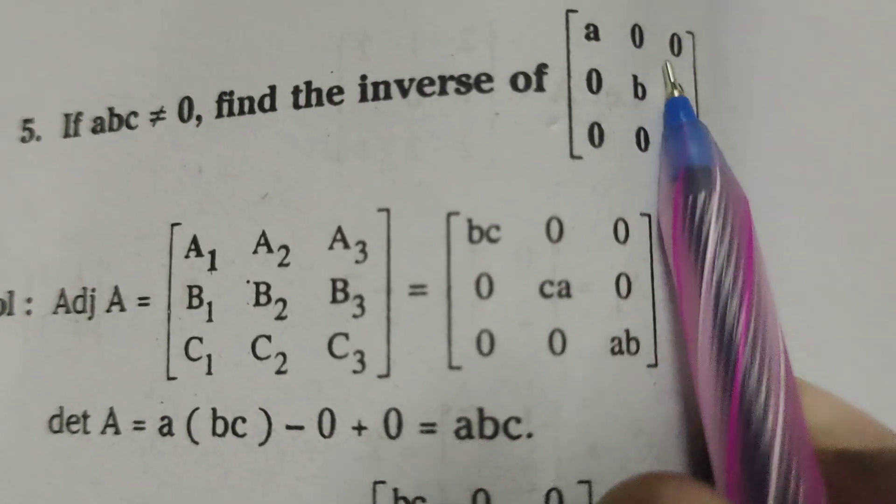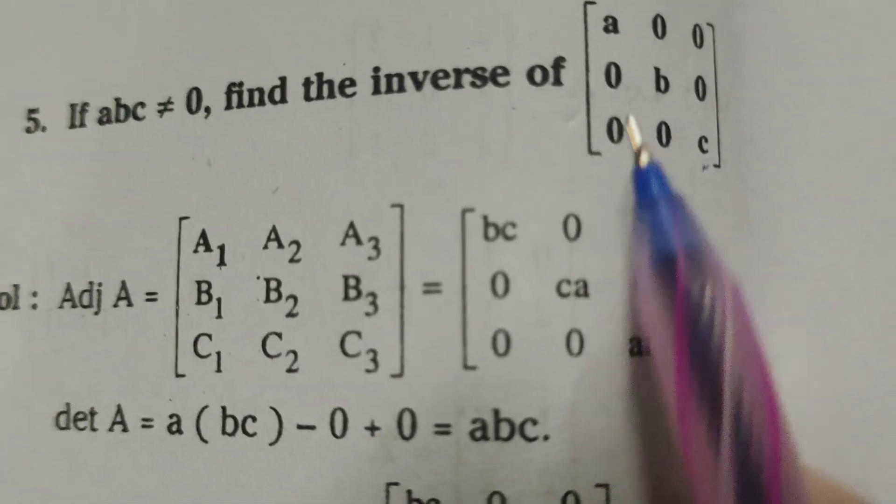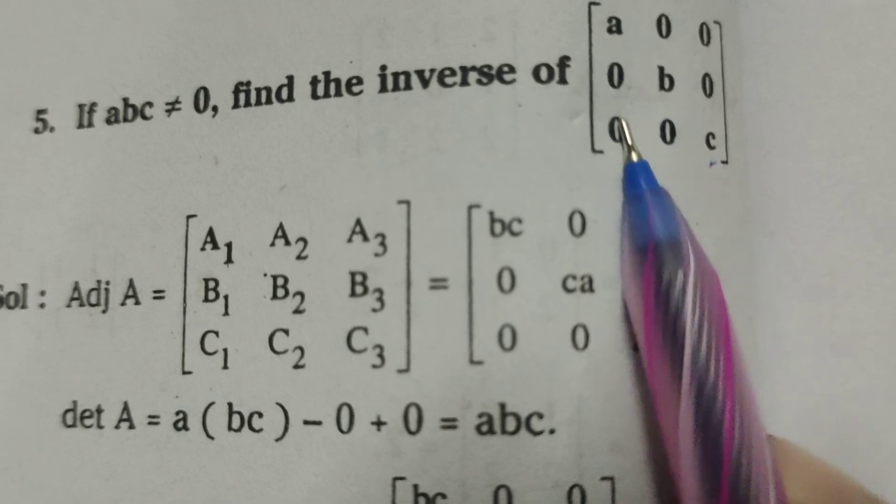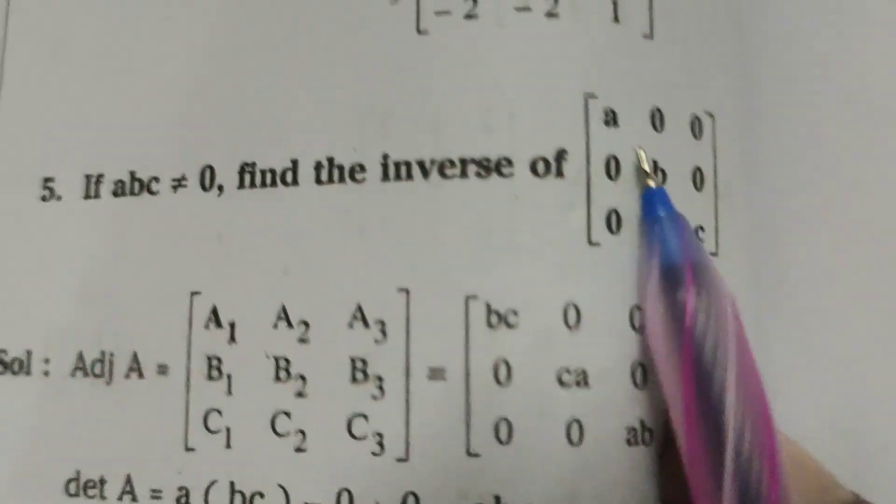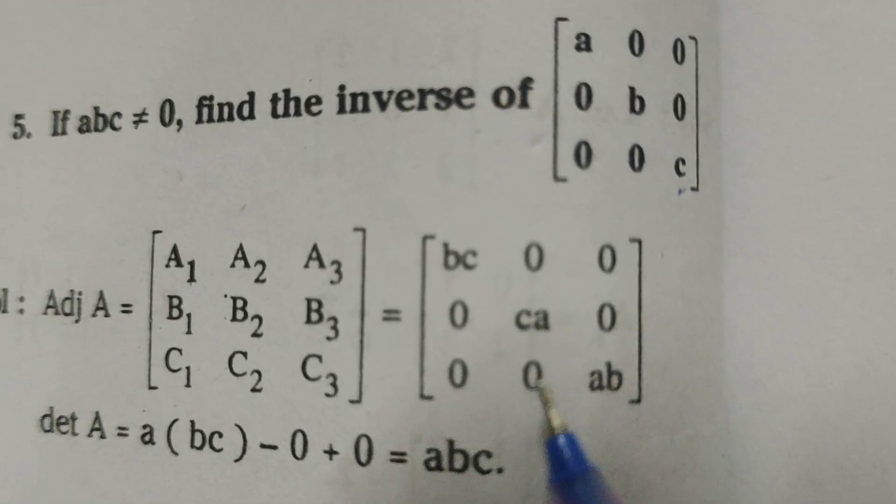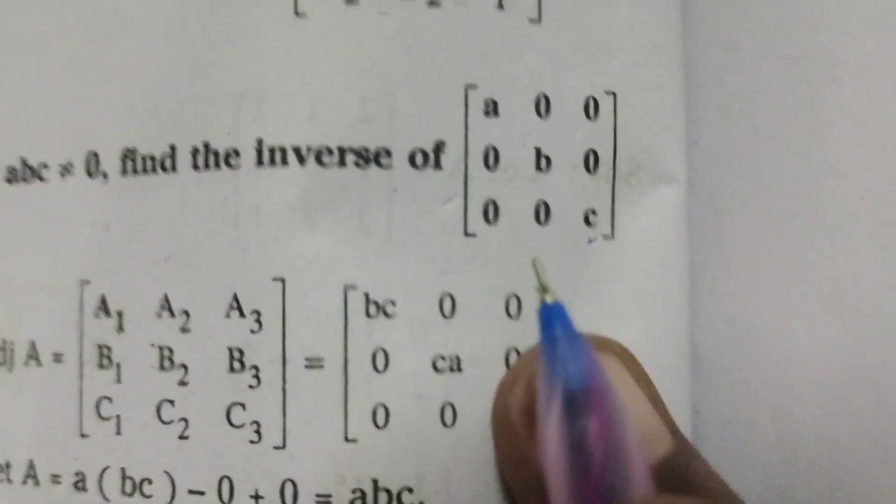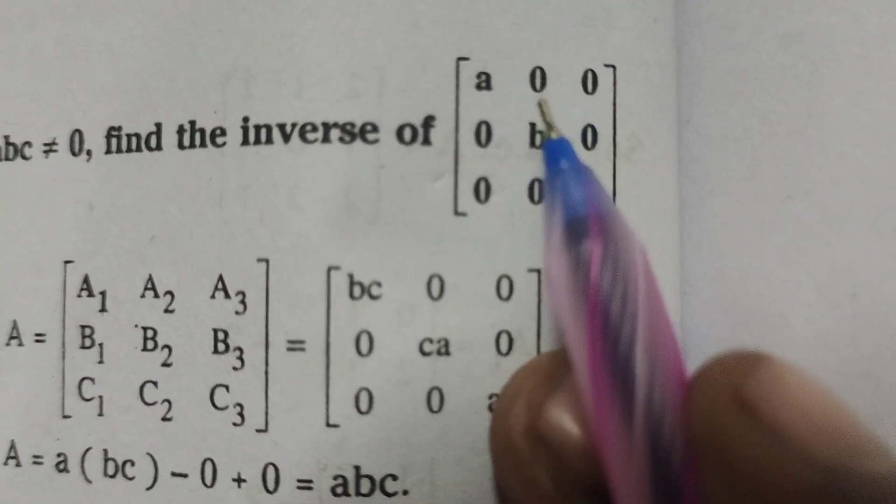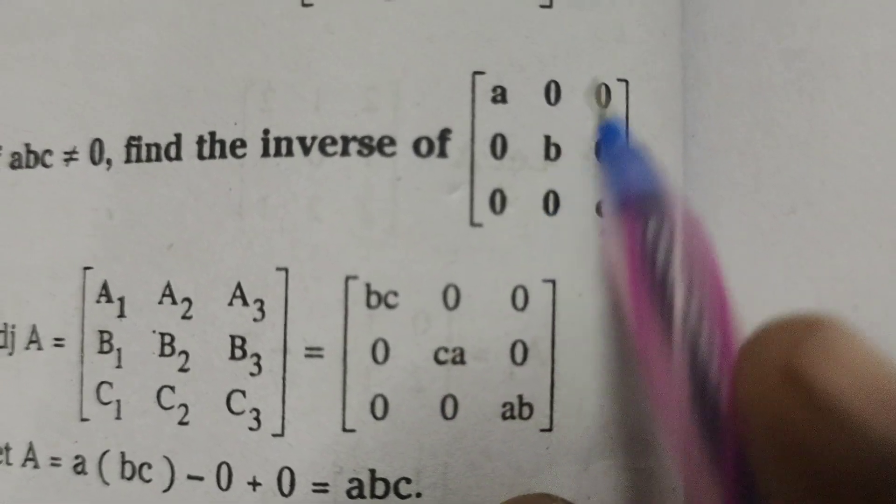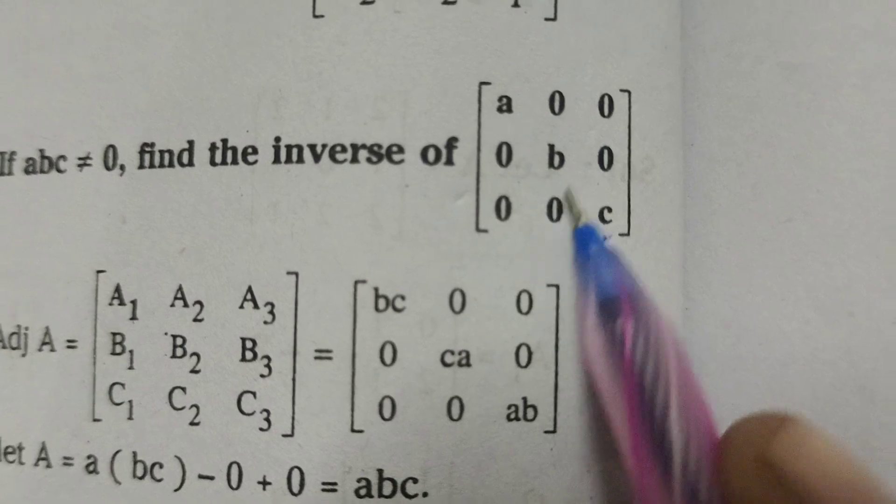Again 0 is there, we will get 0. Next, here 0 into, except this column and this row, here we will get 0.